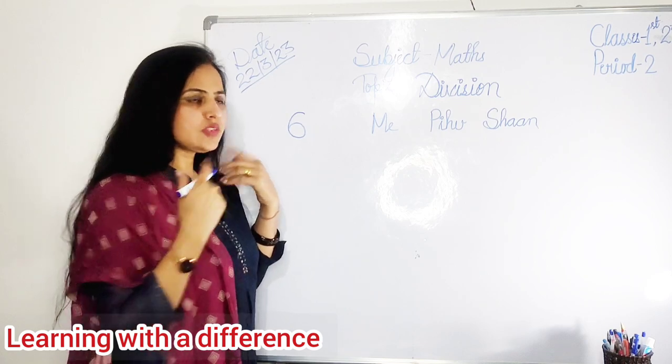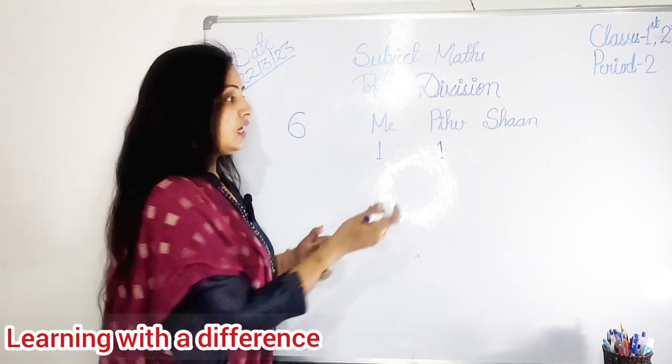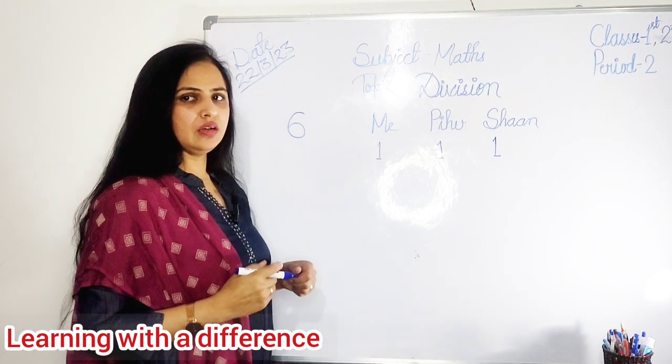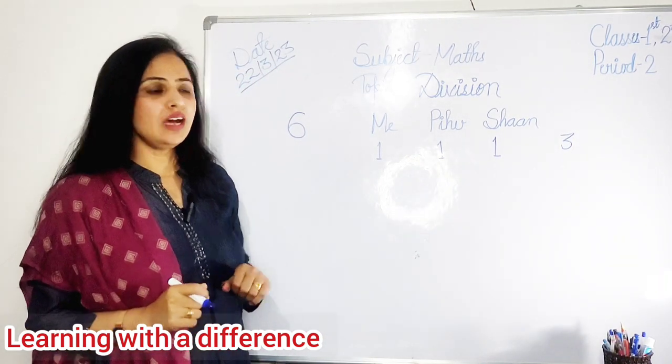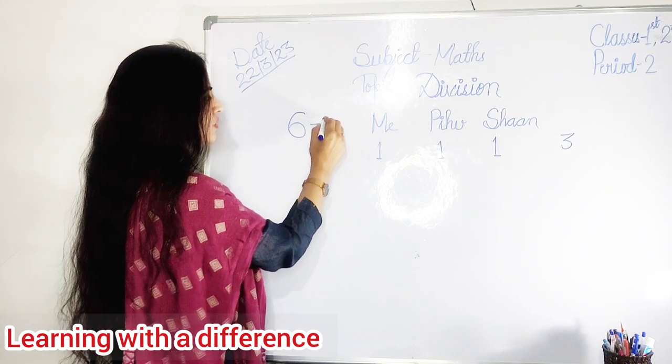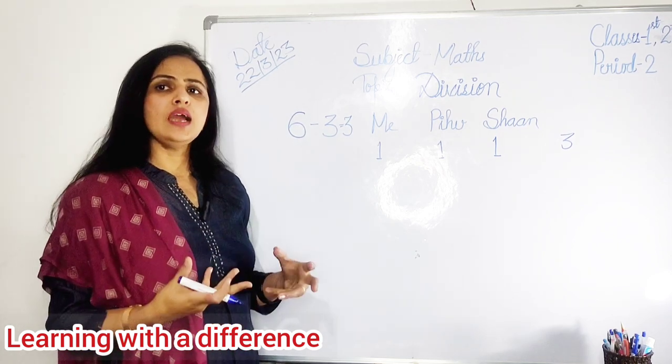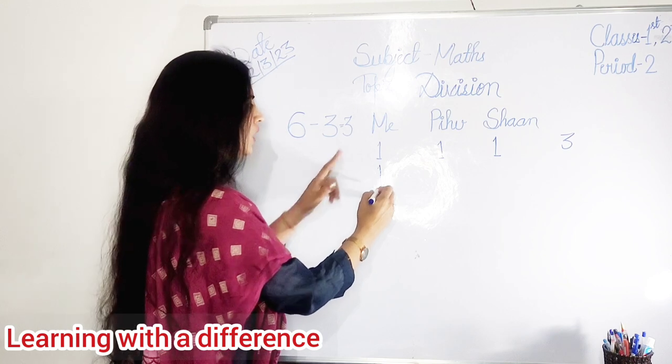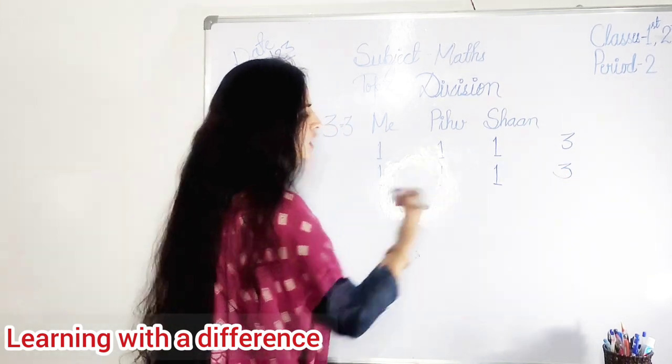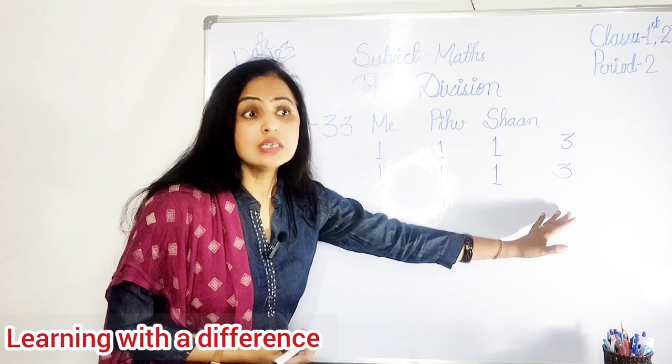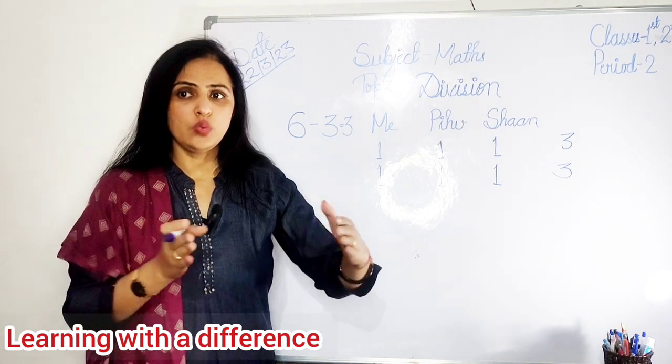So you know what we did? Out of six chocolates, first I took one. Ma'am ne chocolate liya. Then I gave one to Peehu. Ek maine Peehu ko diya. Then again I gave one to Shaan. Three chocolates hamne divide kar diya. Abhi total kitna tha? Six tha. So six minus three, how many left? Three chocolates. Again I repeat. One chocolate I took, one chocolate I gave to Peehu, again one chocolate I gave to Shaan. And three plus three kitna hota hai? Six. Just like that, I divided my six chocolates equally among three people.